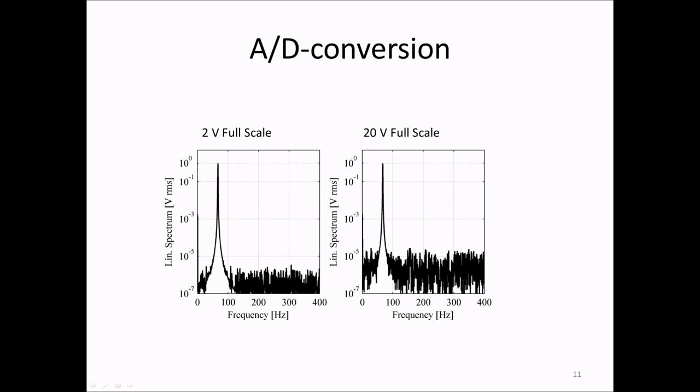Here's a picture that shows the effect of reduced dynamic range. On the left-hand side, a spectrum of a signal filling the range of the ADC is shown. As you can see, the noise floor here, due to the quantization, is well below 10 to minus 5. On the right-hand side, you see the result of increasing the range of the measurement system by a factor of 10, while keeping the signal, the actual signal, constant.